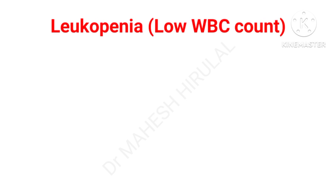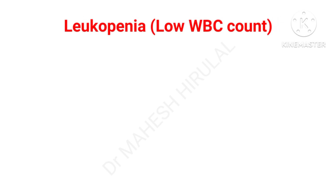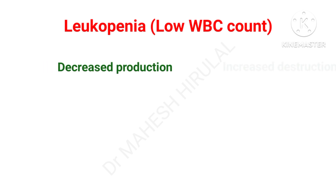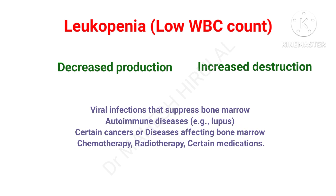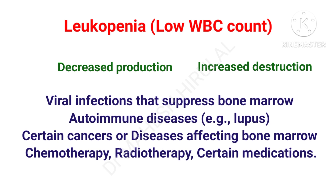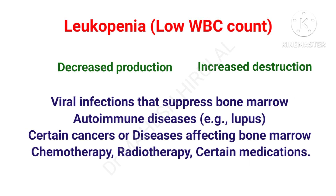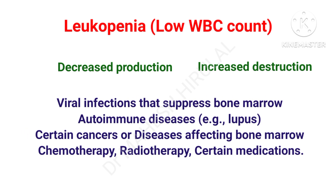Decrease in total WBC count is called leukopenia. It may occur due to decreased production or increased destruction of WBC cells. Leukopenia is most commonly seen in viral infections that suppress the bone marrow, specific autoimmune disorders like lupus, certain cancers, and diseases affecting the bone marrow. It may also result from chemotherapy and radiotherapy.